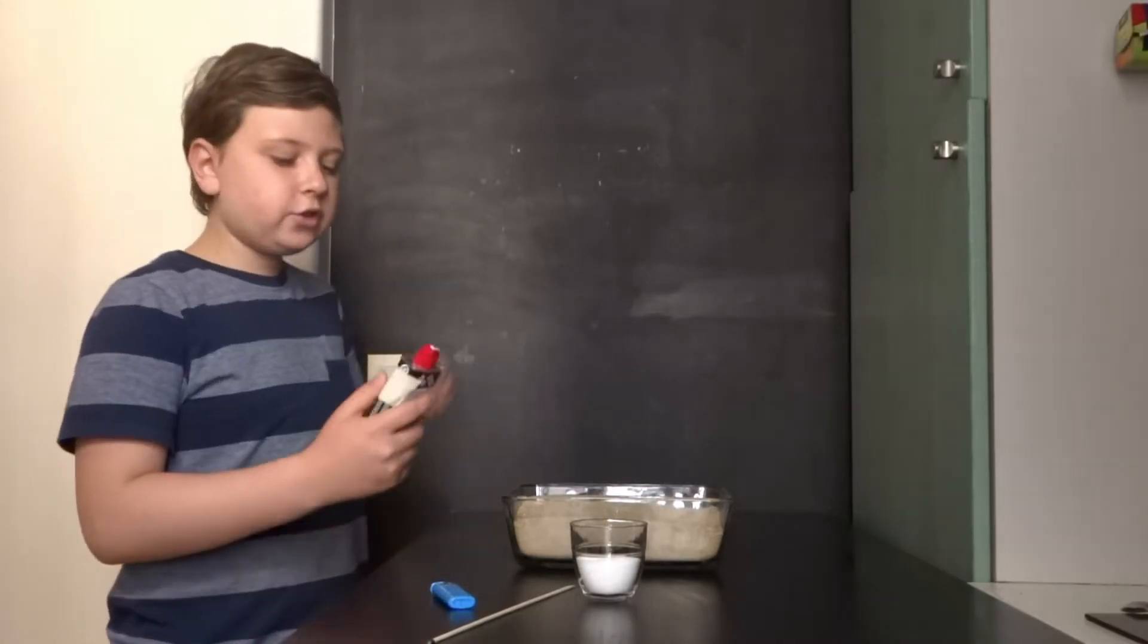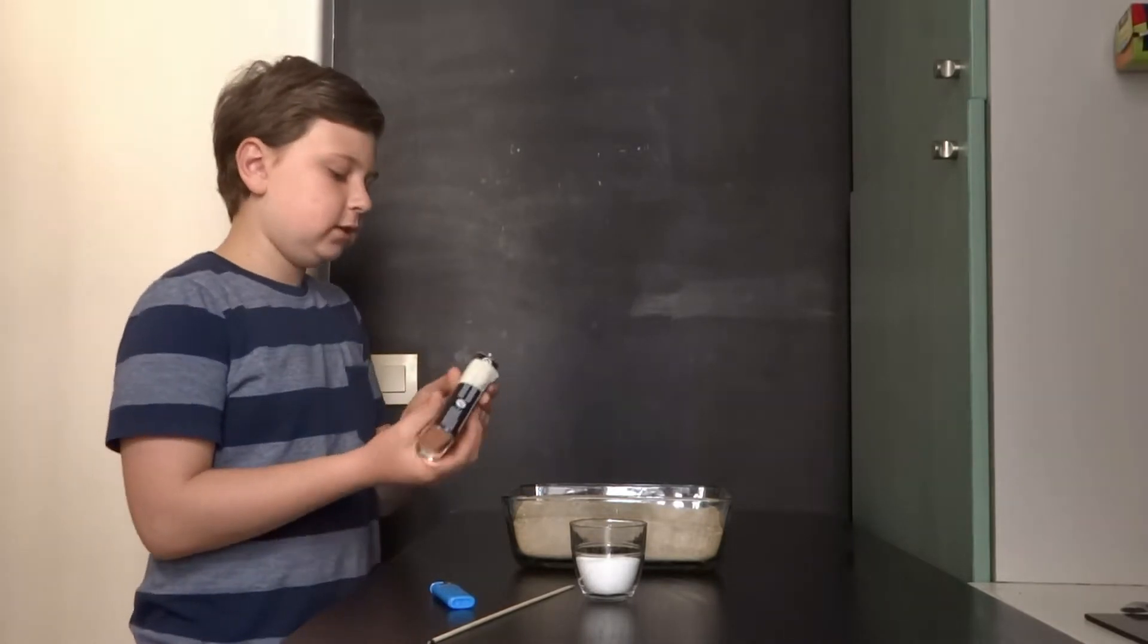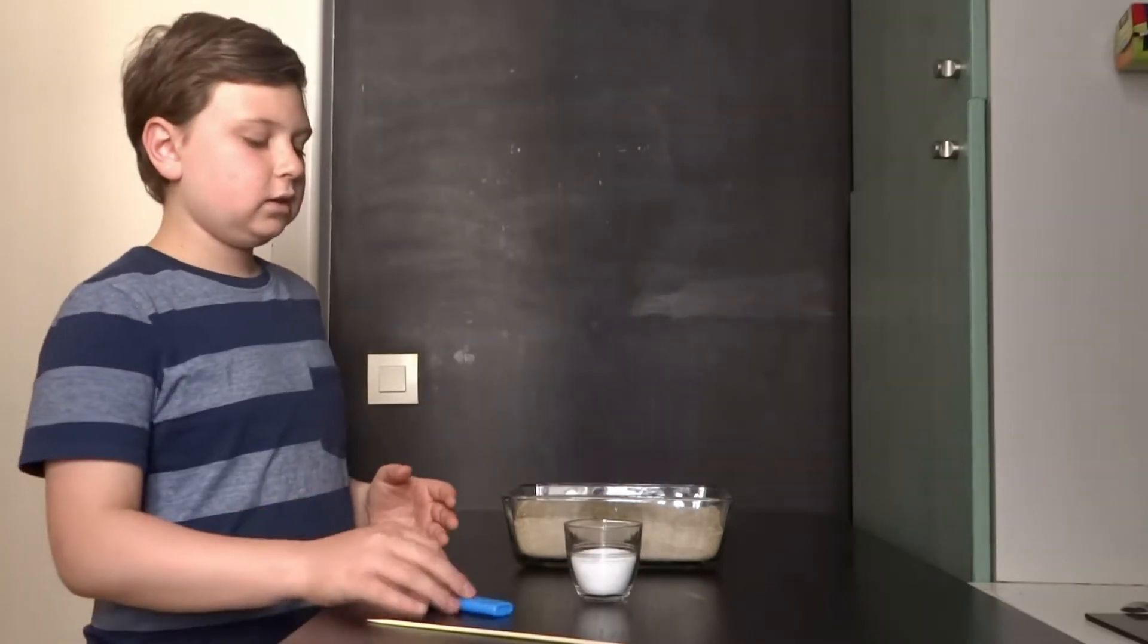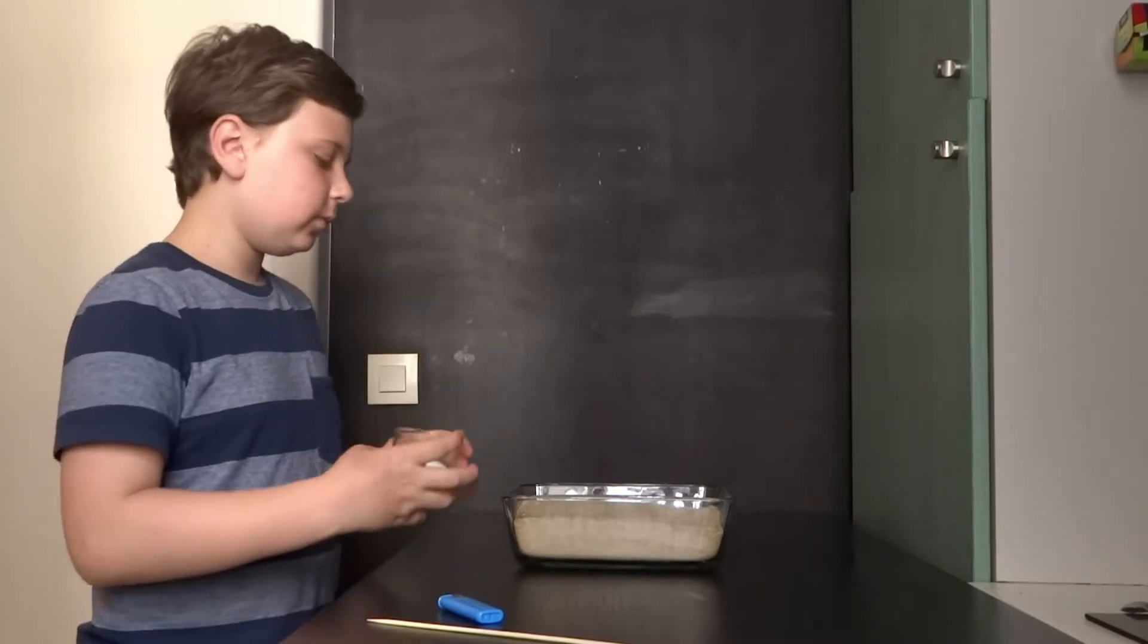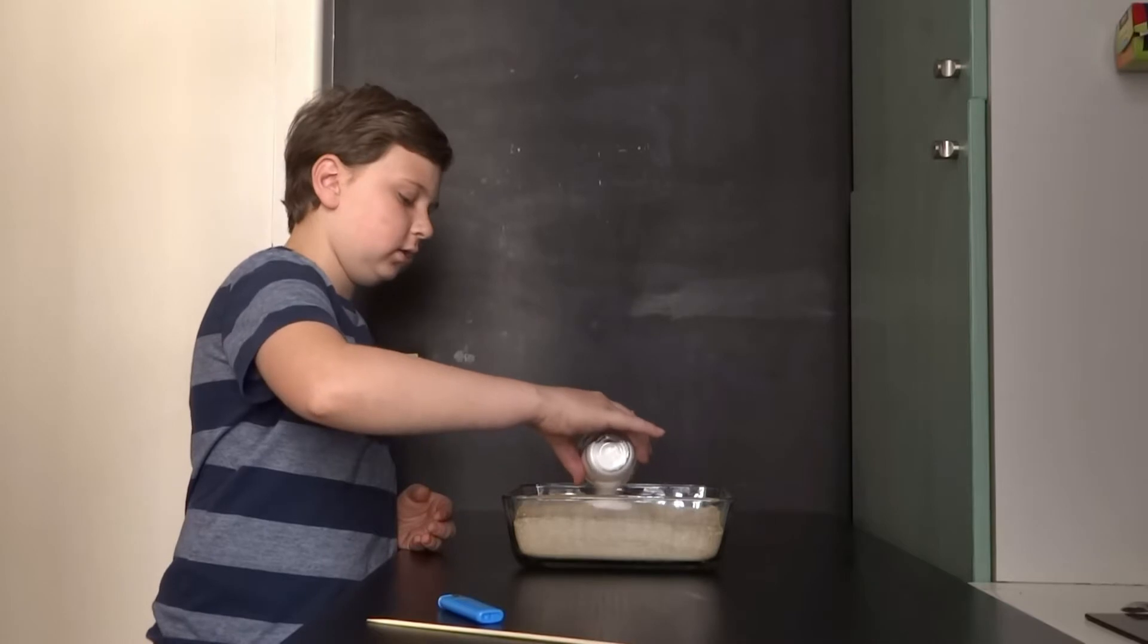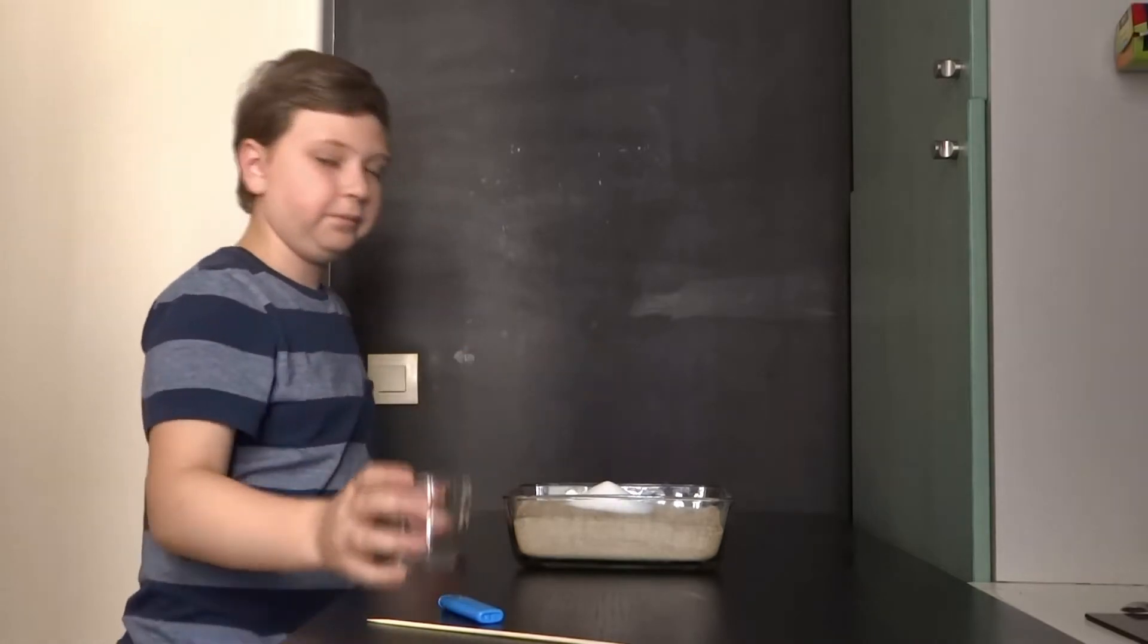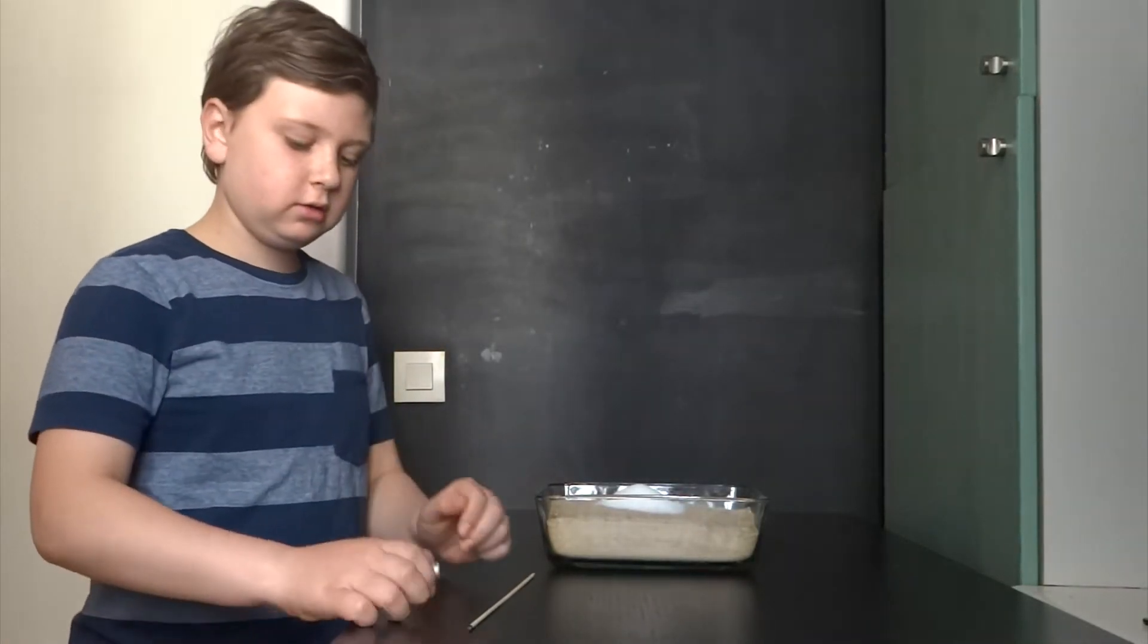Next, we have to add our lighter fluid into our sand. Next, we have to add our baking soda and sugar mixture into the middle of our sand. Then, we just have to light it on fire.